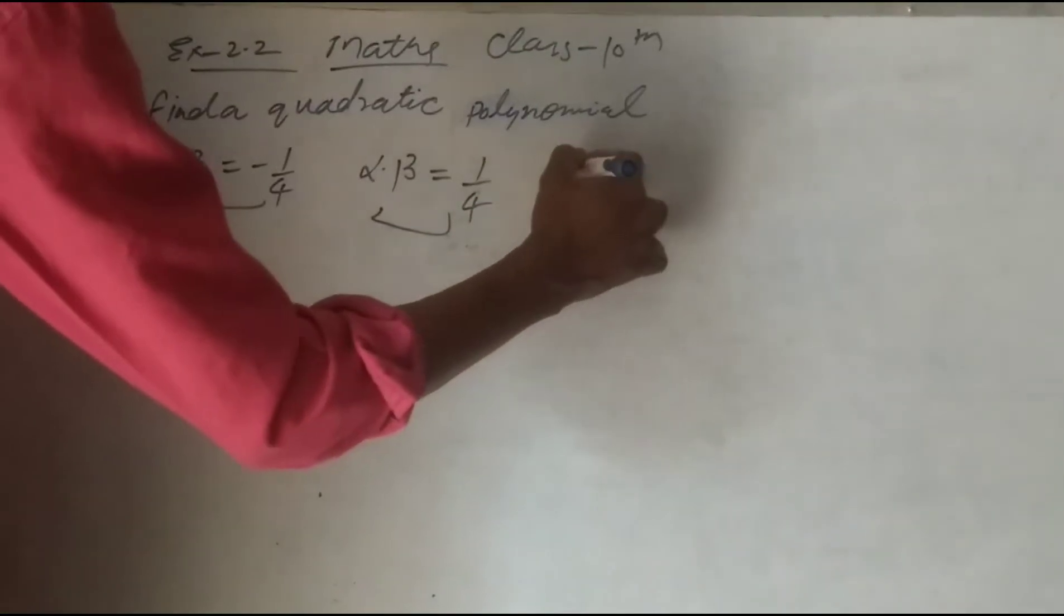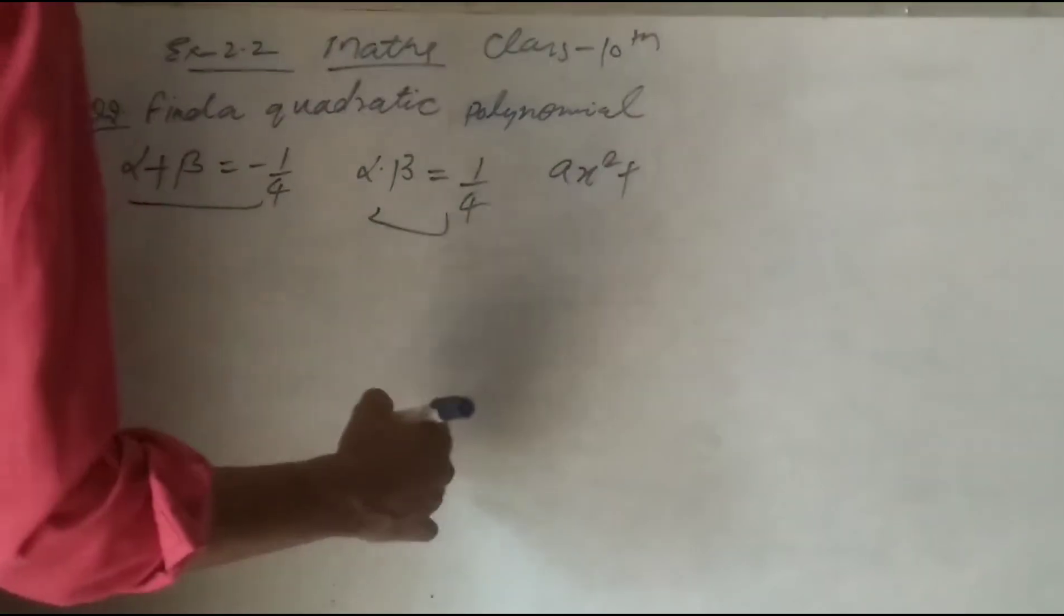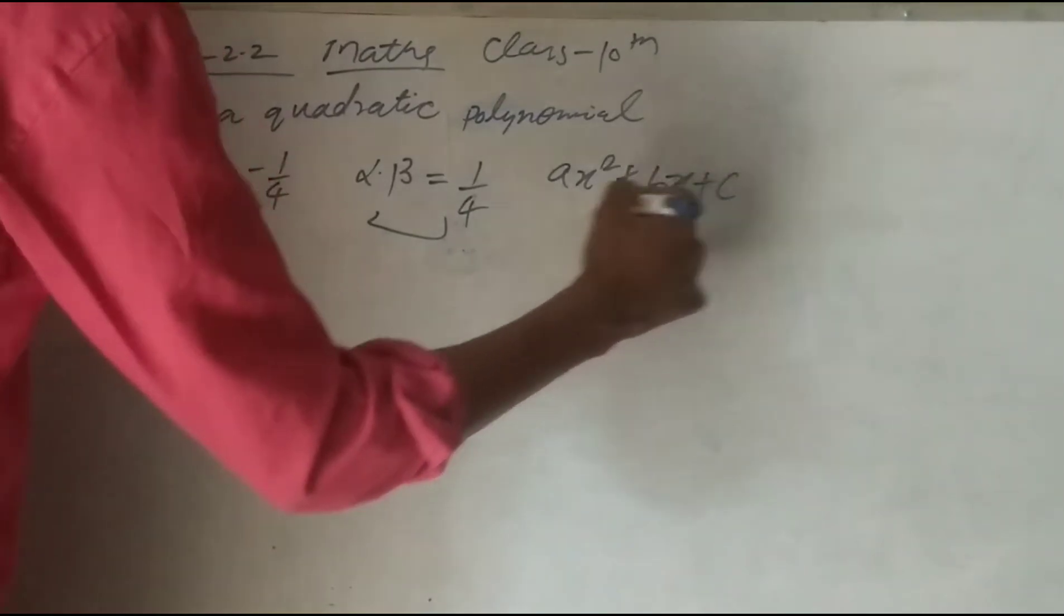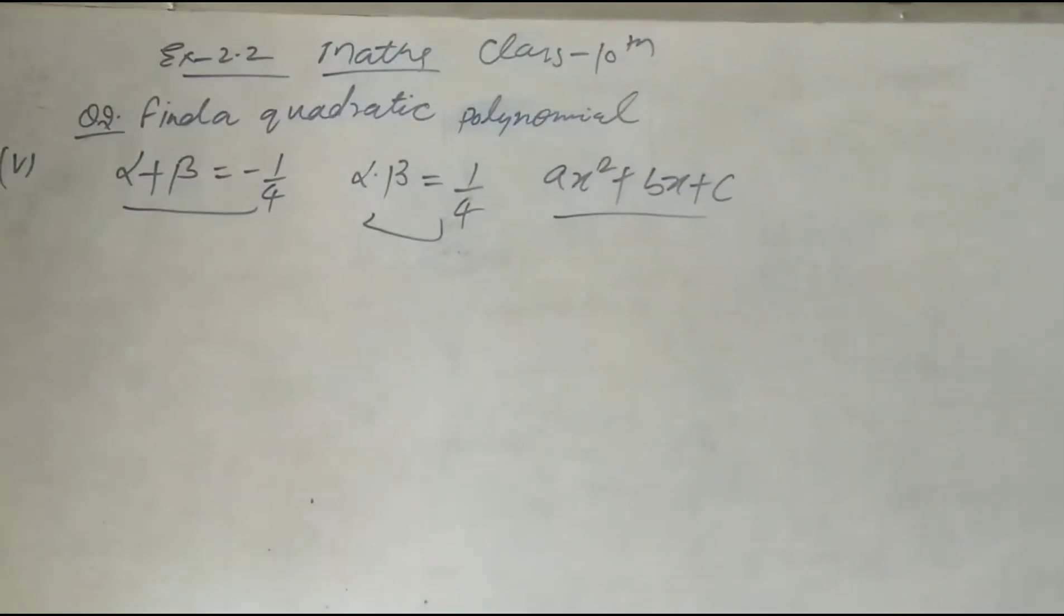What is quadratic polynomial? The general form of quadratic polynomial is x square plus bx plus c. This is the general form of quadratic polynomial.